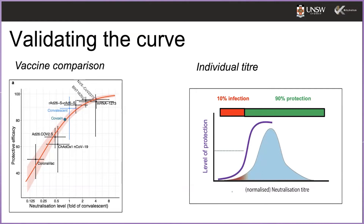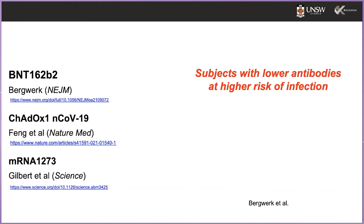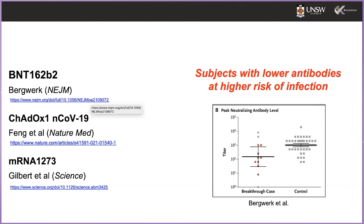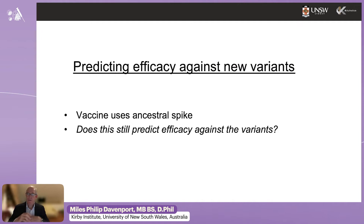To validate this curve with a different dataset: there's an underlying assumption that individuals with a lower antibody titer will be more likely to get infection. There have now been three studies looking at groups of vaccinated subjects and the antibody titers in those who got infected versus those who didn't — with the Pfizer, AstraZeneca, and Moderna vaccines. They all showed the same thing: as predicted, the neutralizing antibody level is lower in those individuals who got infected.